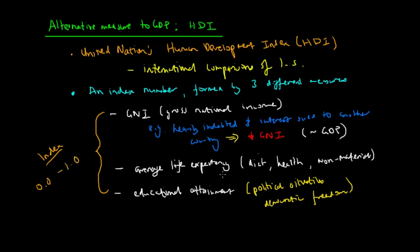all combined into a single index between 0.0 and 1.0. So at the moment we have Norway at the highest HDI, Human Development Index, and I think it's around 0.95. And Australia is a close second, also around the 0.95 area.